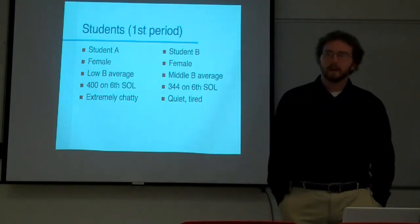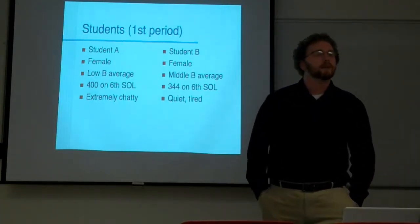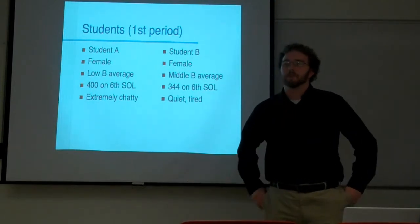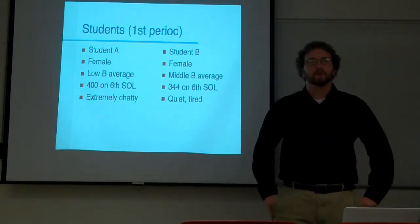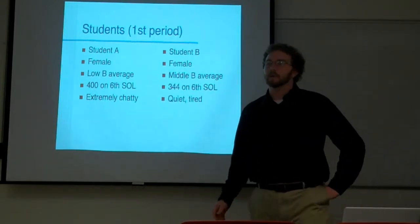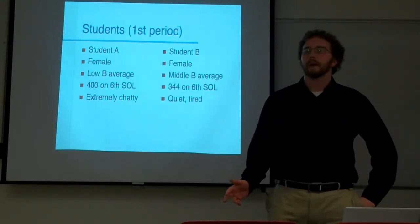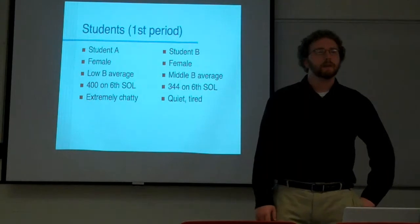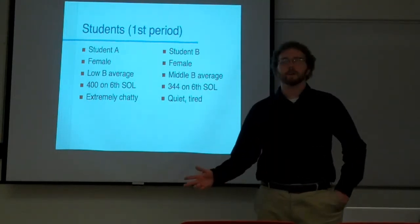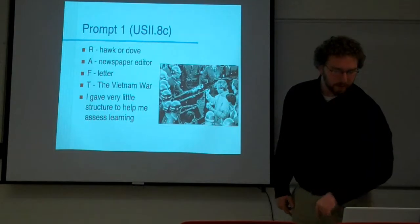Student B is also a female with a middle B average in the class, but she failed her SOL in sixth grade with a score of 344, definitely on the lower end compared to some others. In class, she's pretty tired - I mean, she started at 7:35, I'm tired as well - and she's pretty quiet during class.